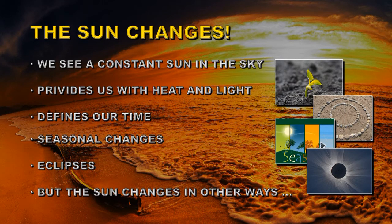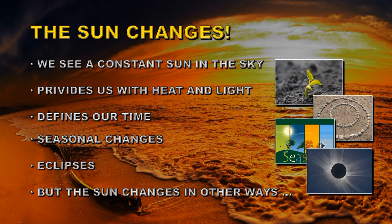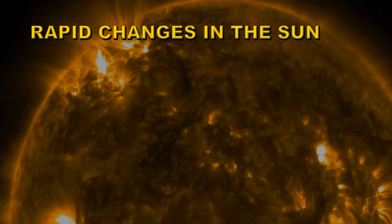But if we could look at the Sun at different wavelengths, or in different ways than just using the naked eye, we see that the Sun changes in many other ways — and those ways are quite interesting and quite important. Changes on the Sun can be rapid, somewhat slower, or very long-term.